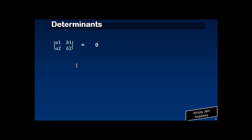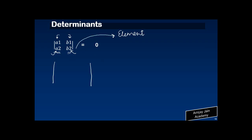Normally a determinant would look something like this. It is built using two straight lines, and then we write down the elements. What we have here is a determinant with four elements. An element is nothing but the constituent numbers or variables present inside the determinant — each one of them is known as an element of a determinant.